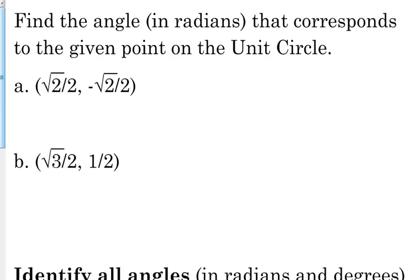Another question you could be asked is, find the angle in radians that corresponds to the given point on the unit circle. So they give us the point square root of 2 over 2, negative square root of 2 over 2. So positive x, negative y, I'm in the fourth quadrant. It's an over 4 angle. That's the angle that I was just dealing with. So theta is 7π over 4.